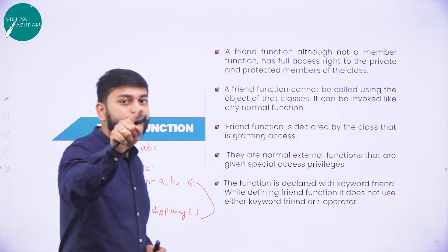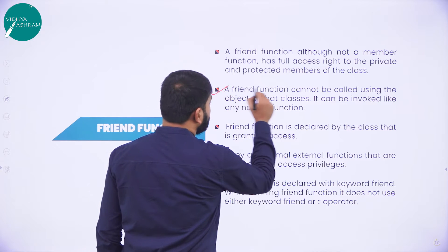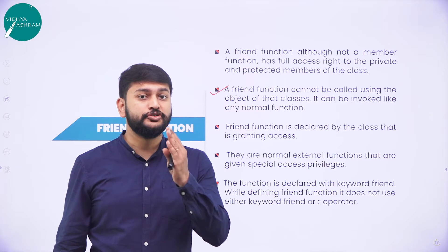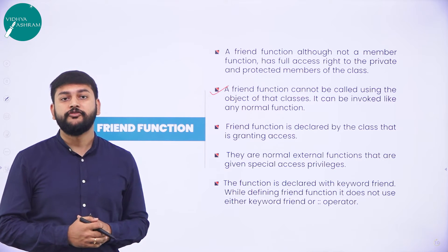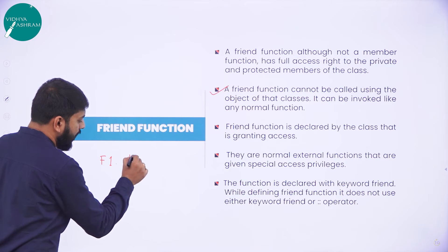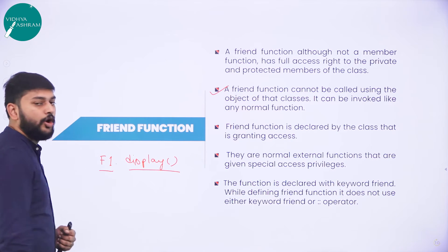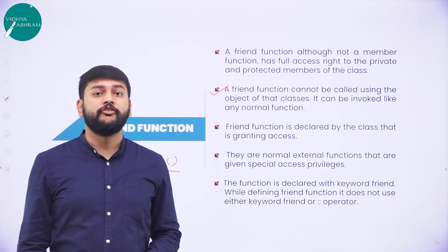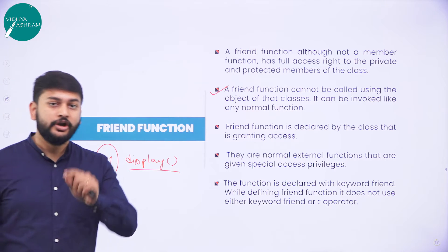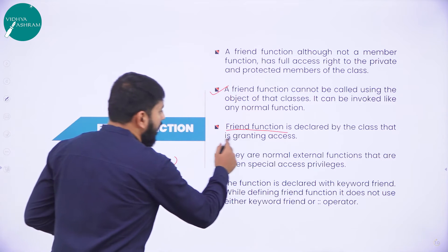Moving on to the next point: a friend function cannot be called using the object of that particular class. You don't have to use the object to call a friend function. For example, normally you would use something like f1.display — where f1 is an object and display is a function. You don't have to use an object to call the friend function. That is the second point to remember.